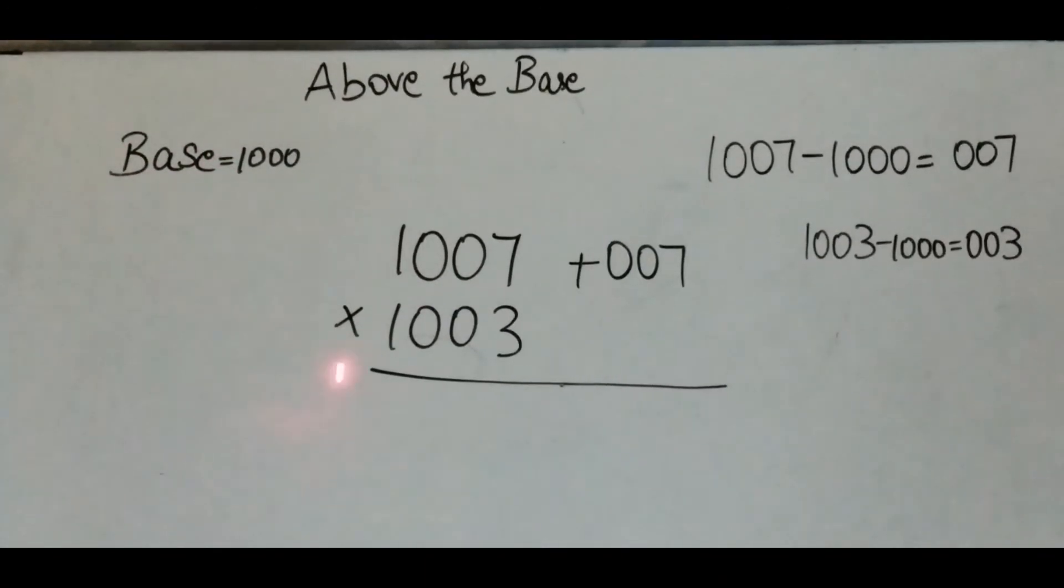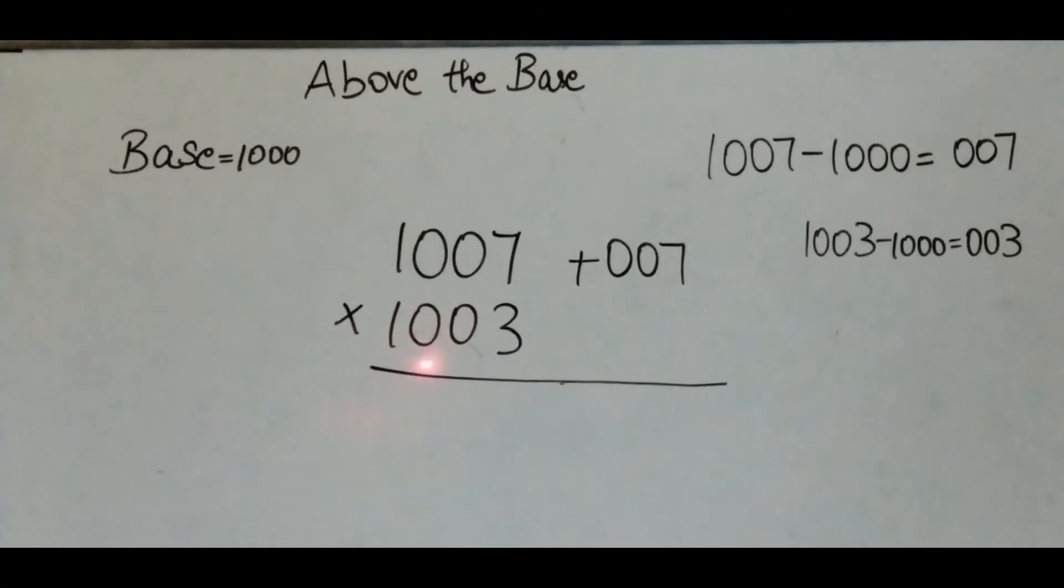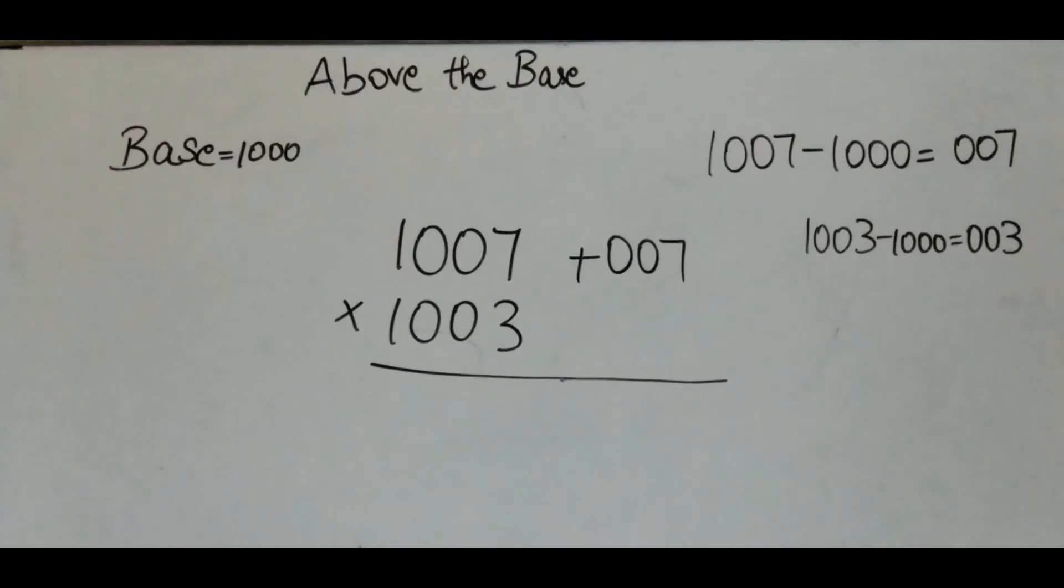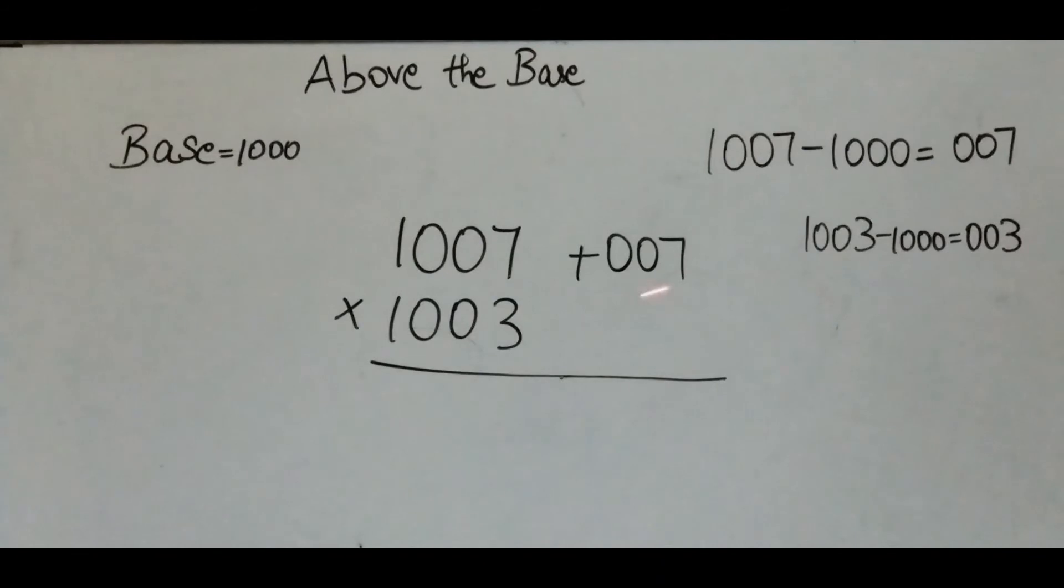First, subtract 1003 minus 1000 which equals 003. Write 003 with a plus sign.